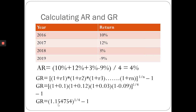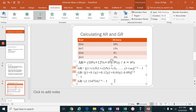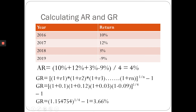If you originally invested $1, your overall return over the four-year period is actually 15.47% — but this is the holding period return, not the annual return. Taking this expression to the power of 1/4 and subtracting one gives you the geometric return, which works out to be 3.66%.